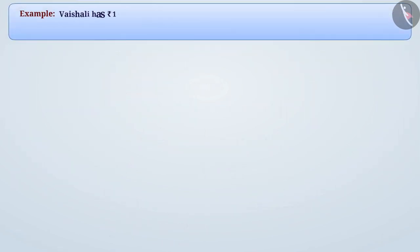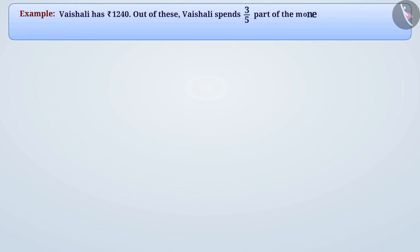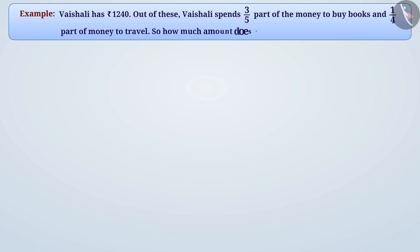Vaishali has one thousand two hundred forty rupees. Out of these, Vaishali spends three by five part of the money to buy books and one by four part of the money to travel. How much amount does Vaishali have left?